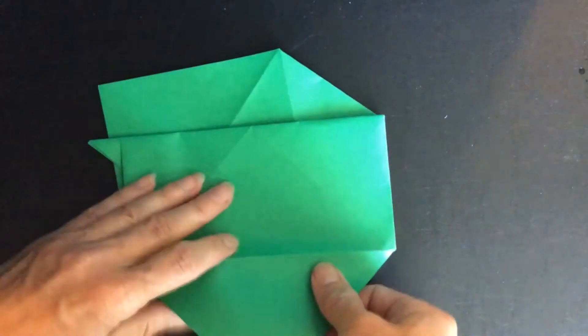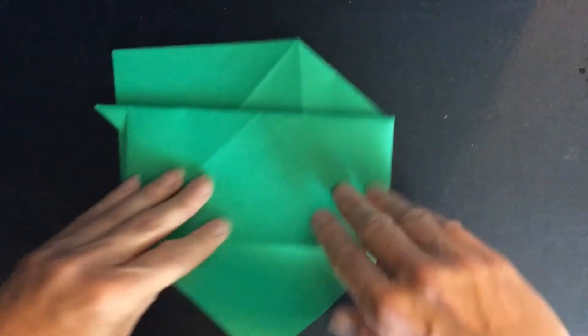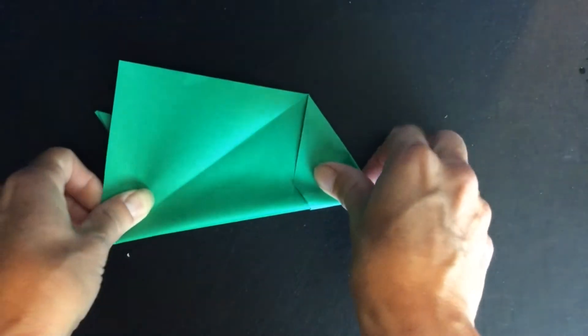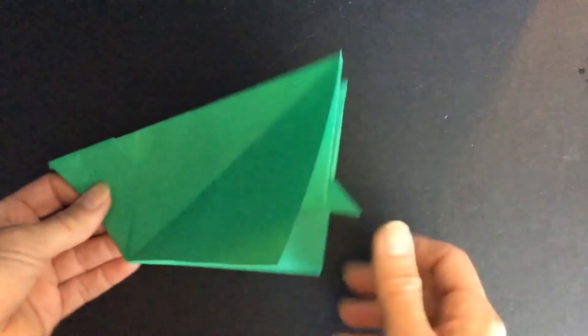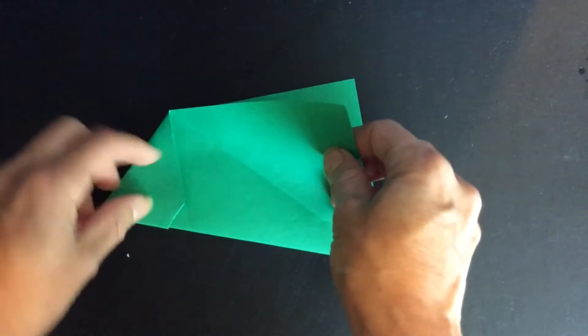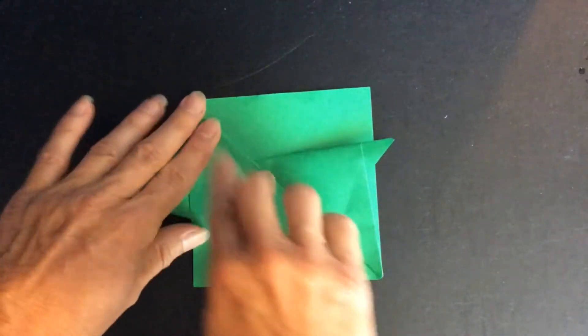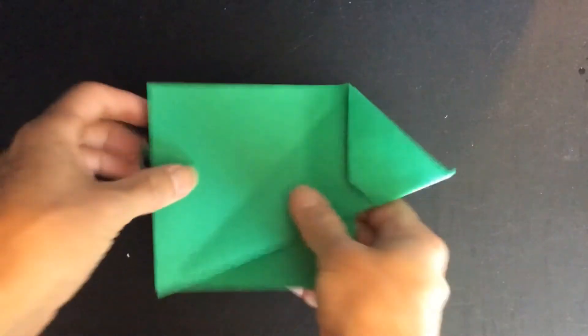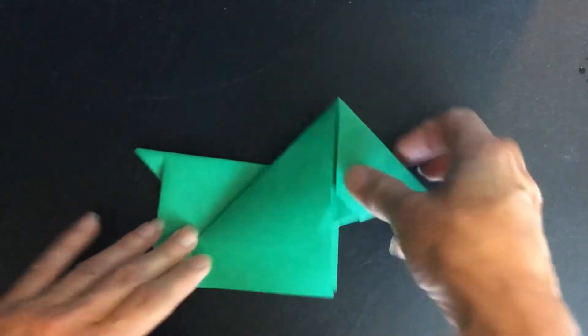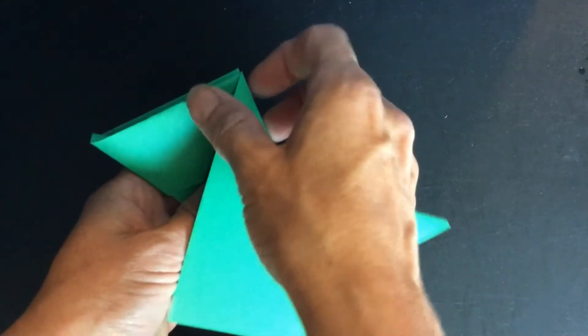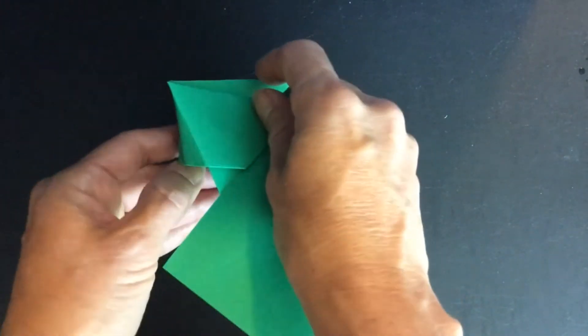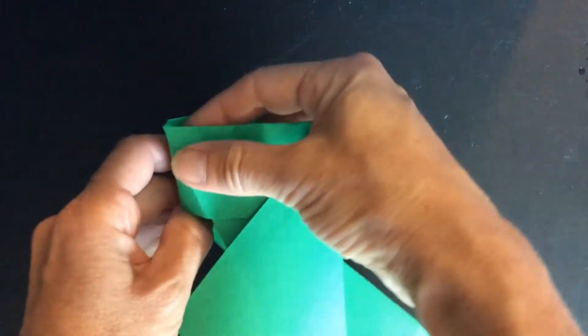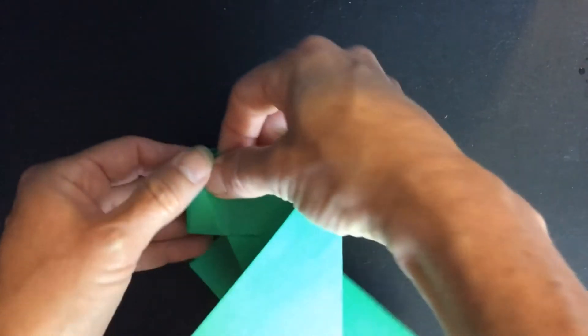And then you get to unfold your flap before you fold it over. All right. Now you take that flap, you unfold it, and you fold it down again. And then you unfold and pull out this little portion.